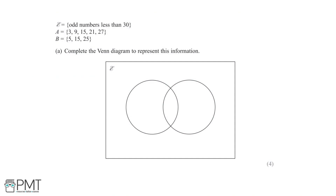In this question, we're given a universal data set, which is denoted by this symbol over here. We're told that this data set contains every odd number that's less than 30. We're also given set A and set B. A contains the numbers 3, 9, 15, 21 and 27, and B contains 5, 15 and 25. In part A, we're asked to complete the Venn diagram to represent this information.